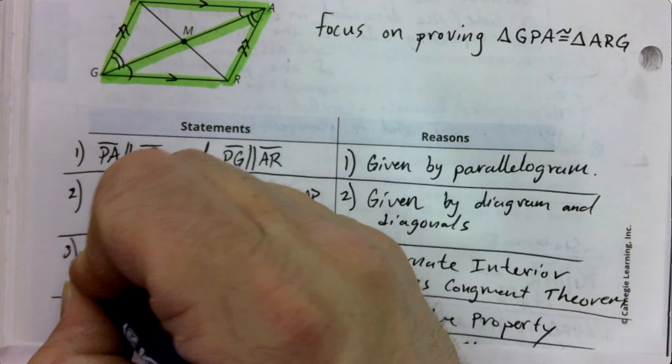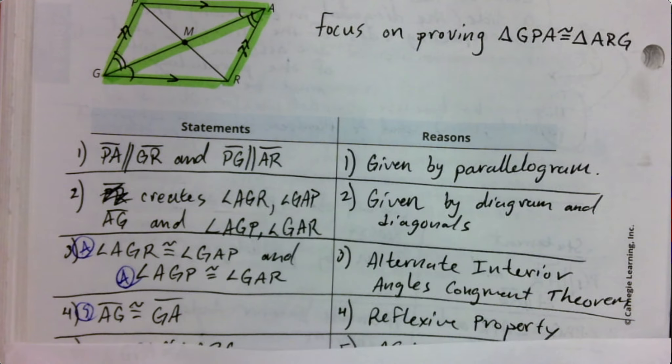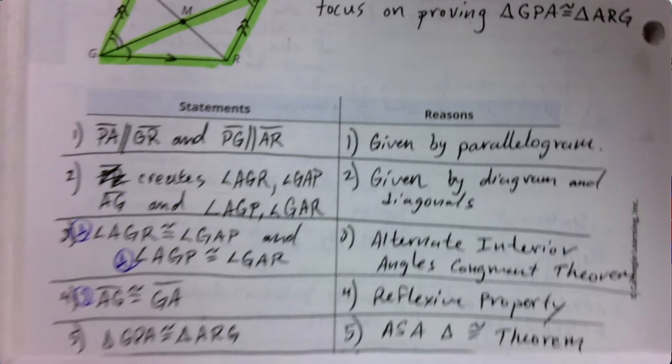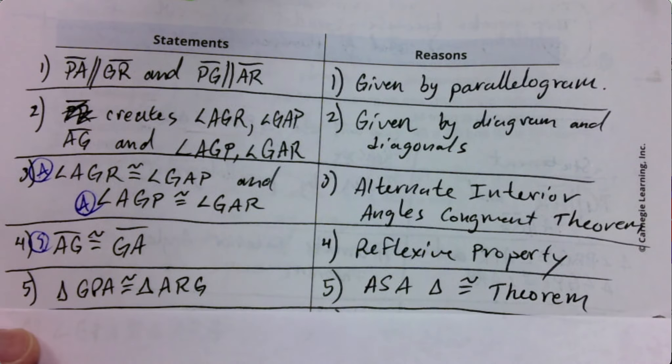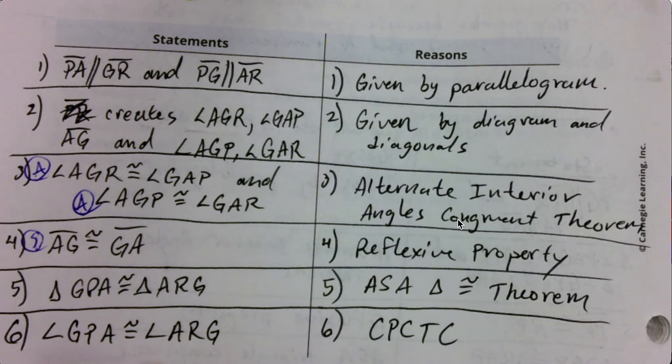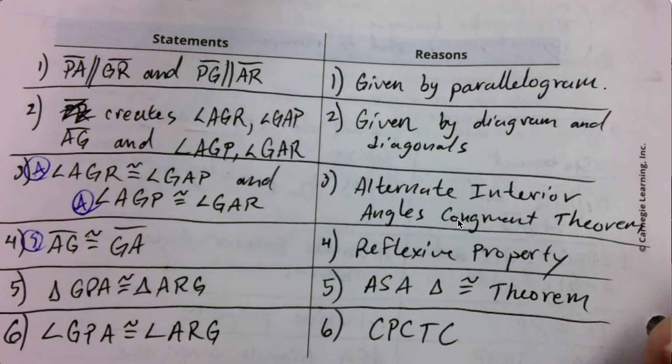Hey, guess what? That lines up an angle side angle congruence theorem. So therefore, the triangles are congruent because they are congruent through angle side angle congruence. And if the triangles are congruent, then the parts are congruent. There it is. That's the whole proof, you guys. That lets us know that these are a pair of opposite angles that are congruent.